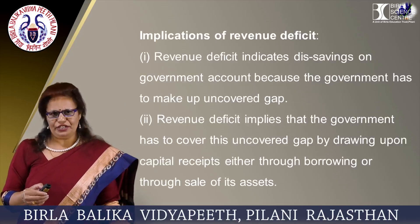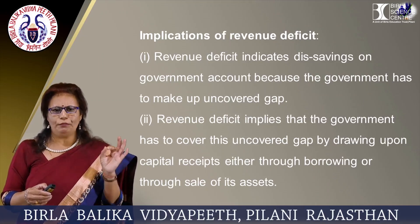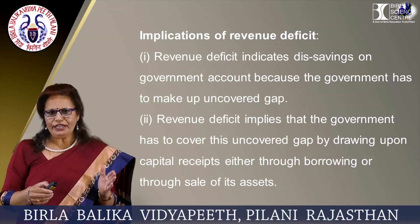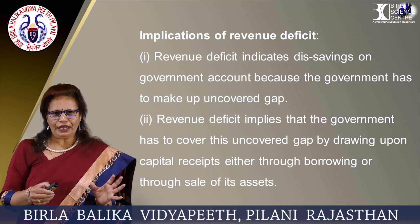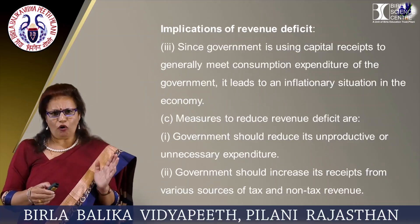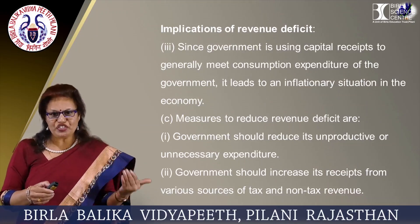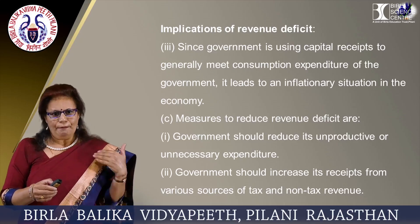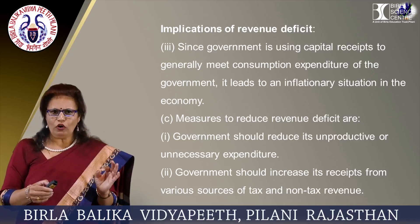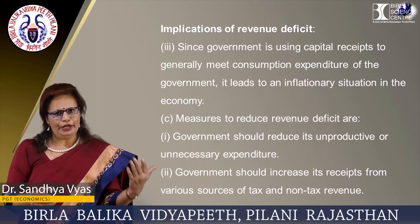Now what are its implications? Revenue deficit indicates dissaving on the government account because the government has to make up the uncovered gap. Revenue deficit implies that the government has to cover this uncovered gap by drawing upon capital receipts, either through borrowing or through sale of its assets. Since the government is using capital receipts to meet consumption expenditure, it leads to an inflationary situation in the economy. Measures to reduce revenue deficit are: the government should reduce its unproductive or unnecessary expenditures, and should increase its receipts from various sources of tax and non-tax revenues.